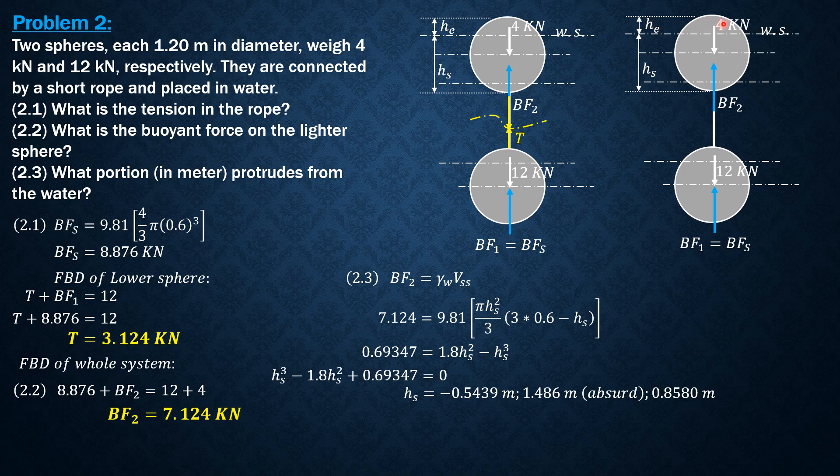Finally, h sub e equals diameter of the sphere, 1.2 meters minus hs, which is 0.858 meter. So h sub e equals 0.342 meters. That's it. This is the solution to this problem. I hope that you were able to follow the explanations and the solutions.